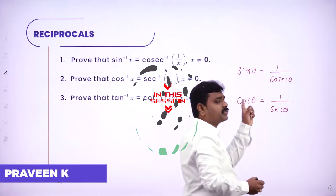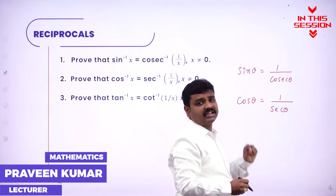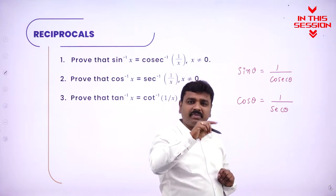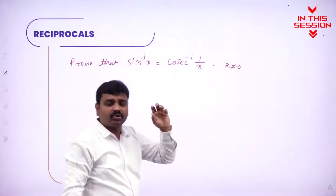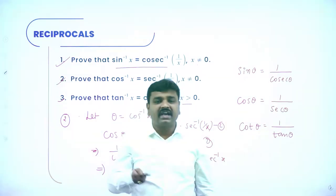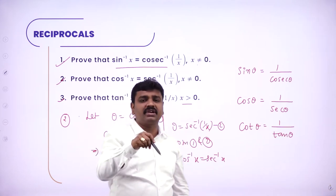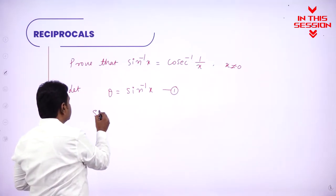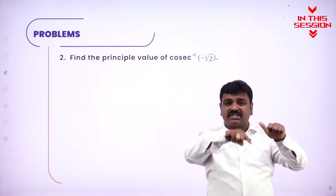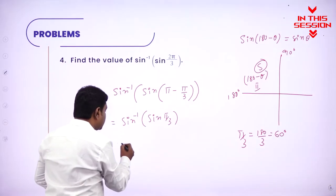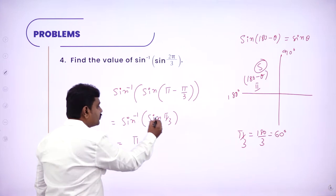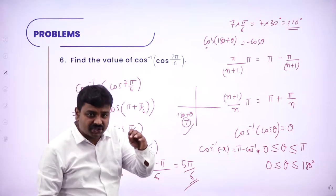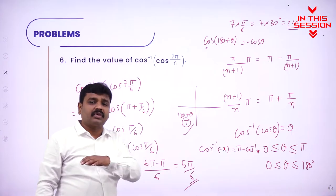Secant theta is the reciprocal of cos theta. Secant can be written as 1 by cos, or cos can be written as 1 by secant. You should know reciprocals. Tan inverse x can be written as cot inverse 1 by x. When sin inverse crosses the equal sign it becomes sin. Sin inverse of minus x is minus sin inverse x. Sin inverse of sin theta becomes theta. Sin inverse of sin π/3 is just π/3. Today I will be teaching you reducing the problem to simplest form.